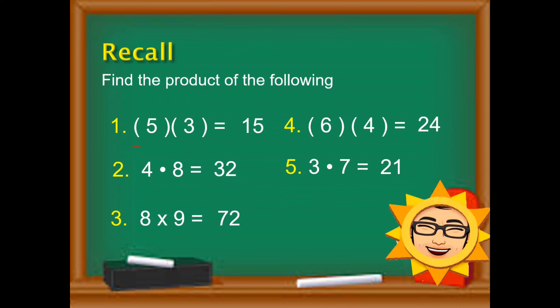So parenthesis — if we have parenthesis, that is a symbol that we use in multiplication. Pwede natin itong gamitin. Tiyakin lang na walang ibang operation sa pagitan ng dalawang parenthesis, kasi maiiba na yun — hindi na siya multiplication. Another is the bullet or dot operation. Tiyakin lamang na yung dot ay wala sa bandang baba, kasi magiging decimal point yun — dapat nasa gitna.